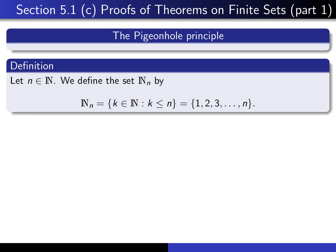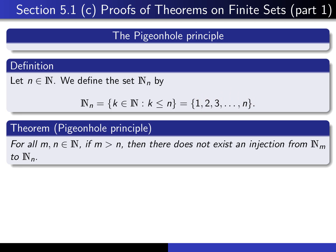Here's a definition we've seen before. For each n in the natural numbers, we define N_n to be all of the natural numbers from 1 up to n. Then the pigeonhole principle says that for all m and n in the natural numbers, if m is bigger than n, then there does not exist an injection from N_m into N_n.